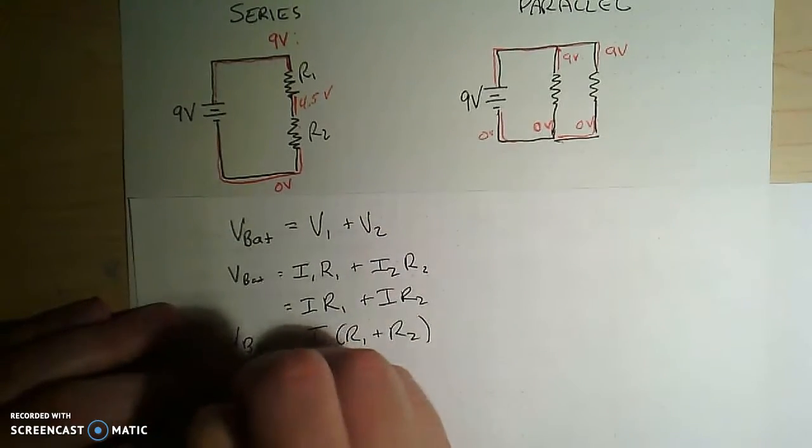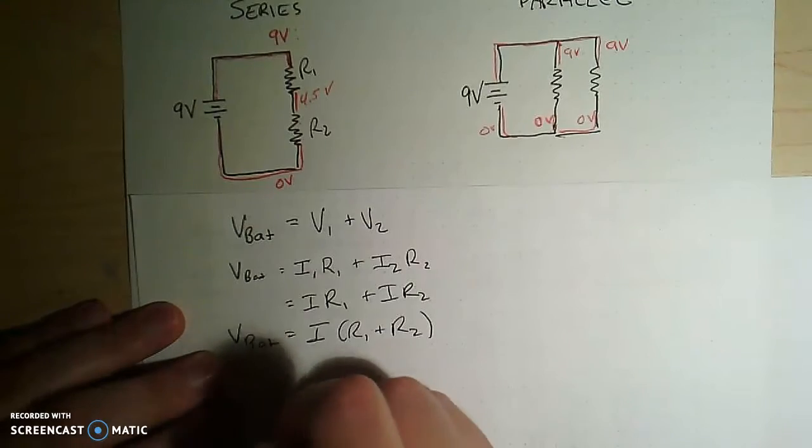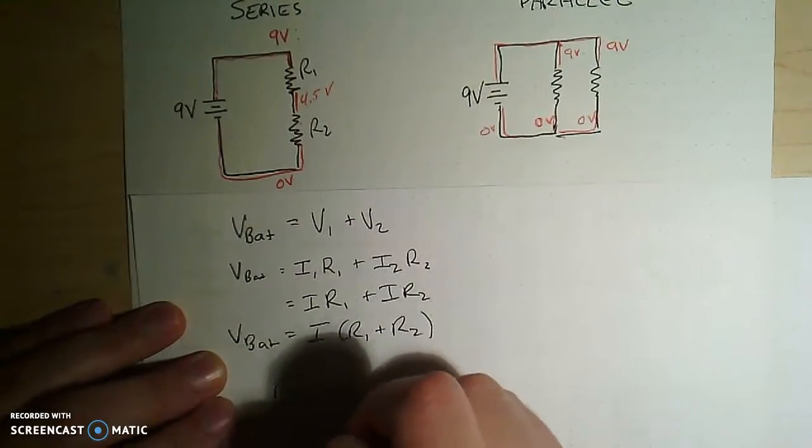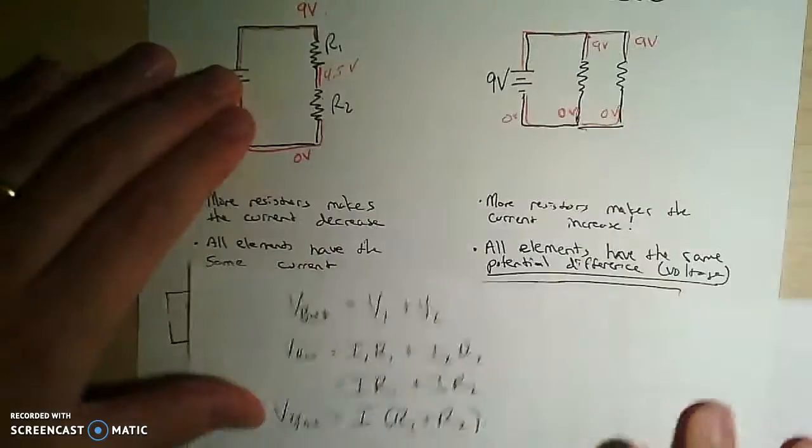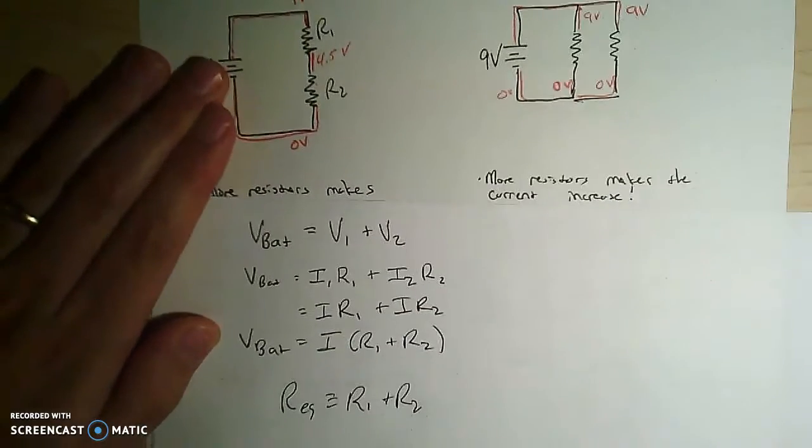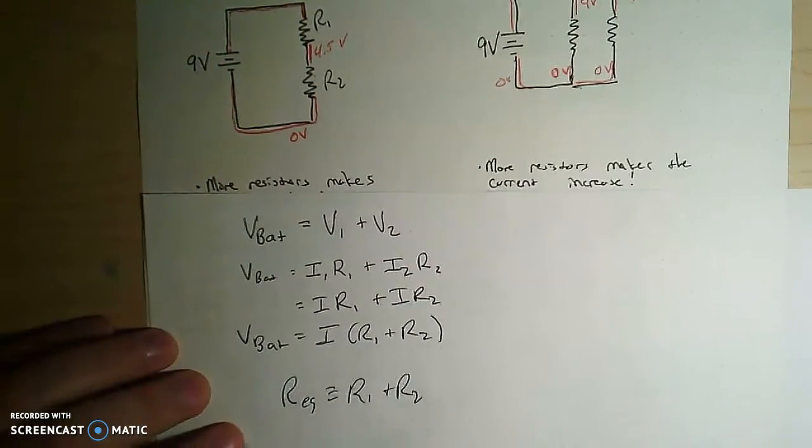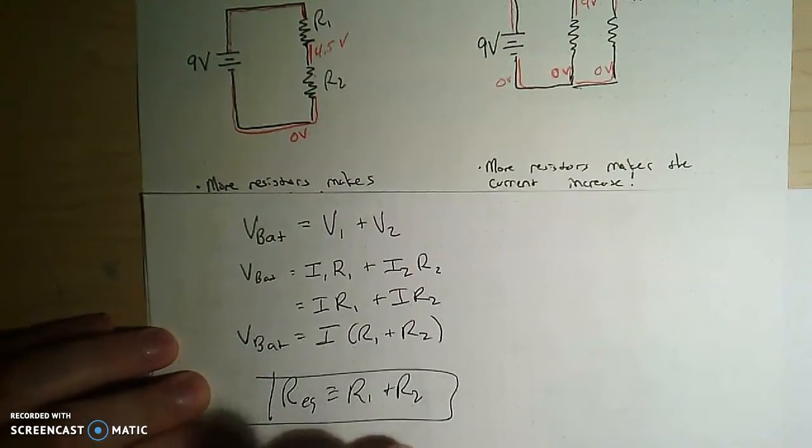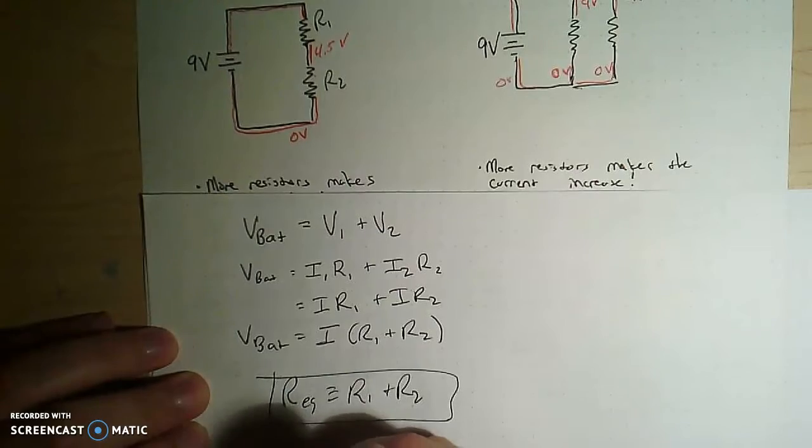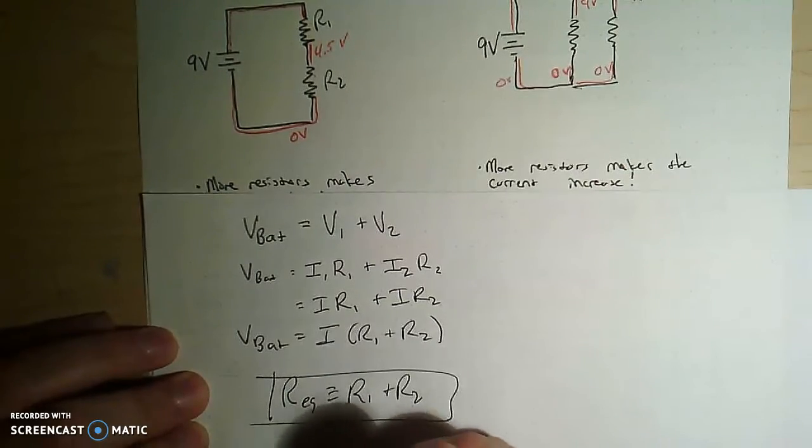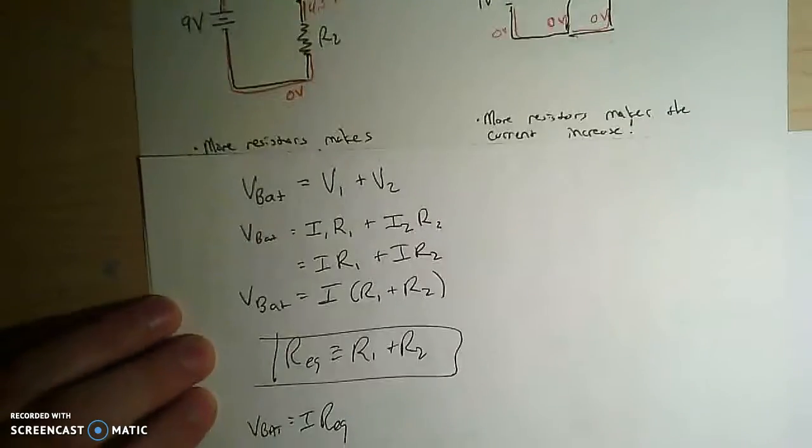And you can see that if I define the equivalent resistance as R1 plus R2, just like I did right there, if I define the equivalent resistance as R1 plus R2, then I still can recover Ohm's law from this.